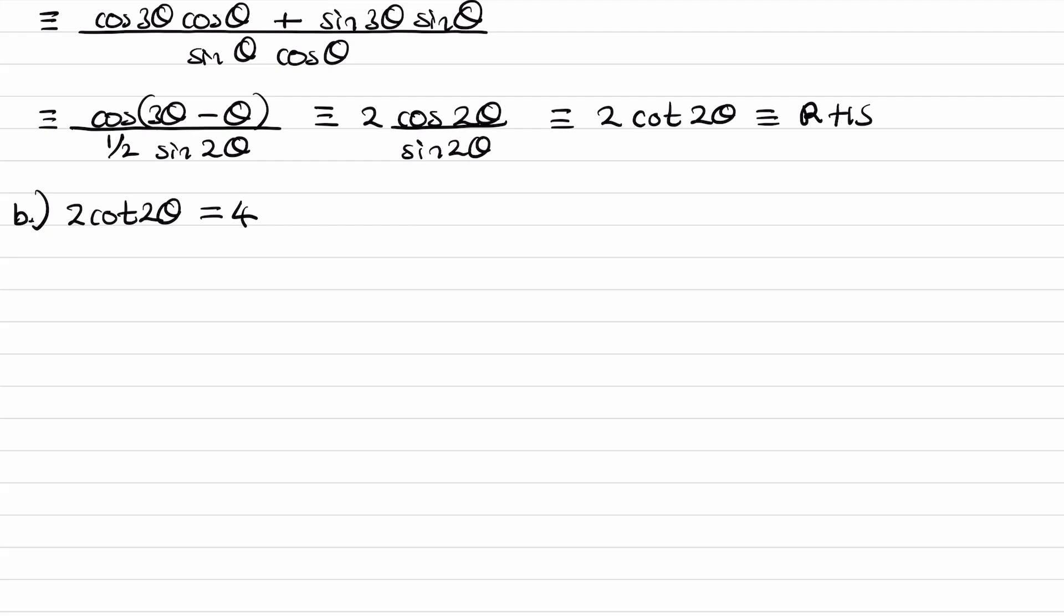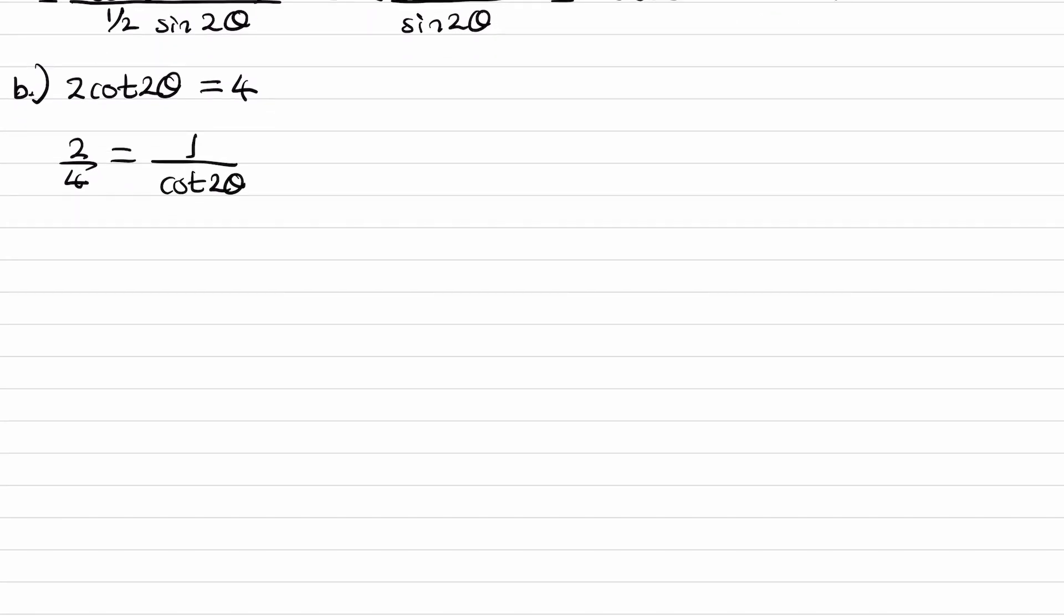So, rearrange this. I'll bring the cot to the other side, the 4 to the other side. So, it becomes 2 over 4 is equal to 1 over cot 2 theta. 1 over cot is the same thing as tan. So, this is then tan 2 theta is a half.